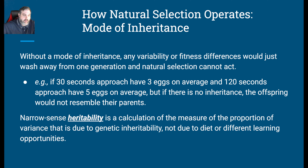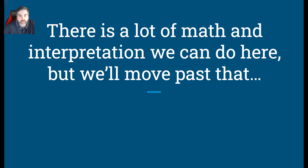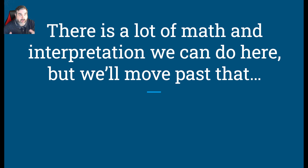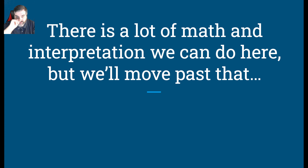So at this point, we've established that you have to have these three things in order for natural selection to operate. Narrow-sense heritability is a calculation of the proportion of variance due to genetic variability, not due to diet or different learning behaviors. There's a lot of math and interpretation we could get into, but I want this to be a high school-level animal behavior class rather than undergrad or graduate level. I'm going to stop the video here and get ready to get into a case study, so let's make that a separate video.